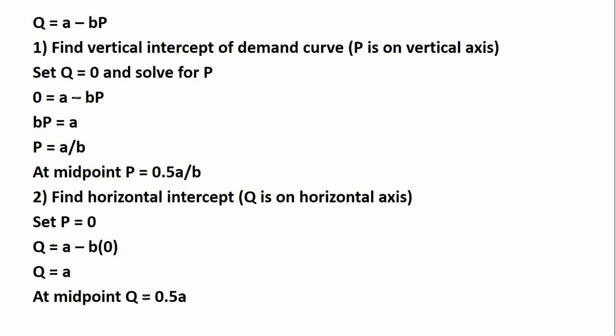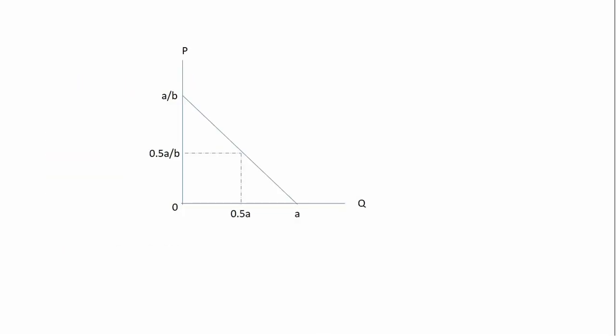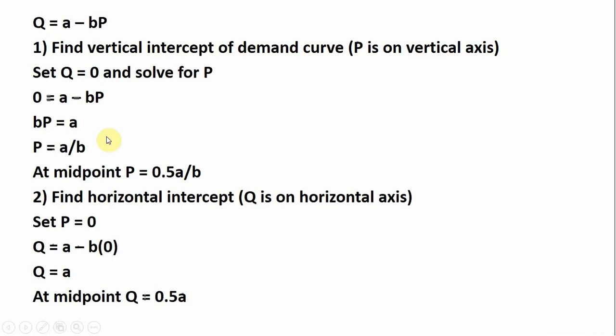Given the demand touches the price axis at A divided by B, the midpoint of the demand curve... excuse me... at the midpoint of the demand curve, the price will equal half of this vertical intercept. So we get 0.5 times A divided by B.